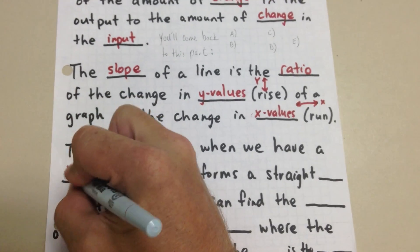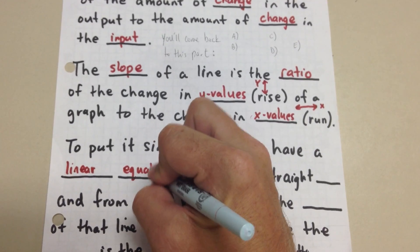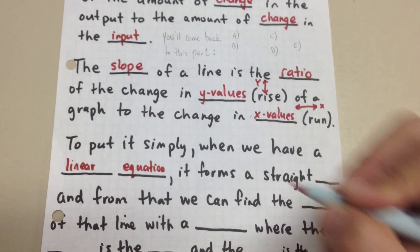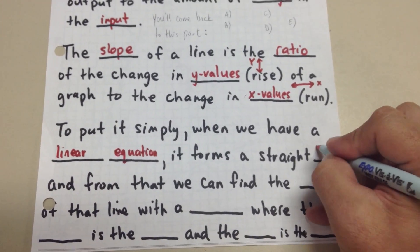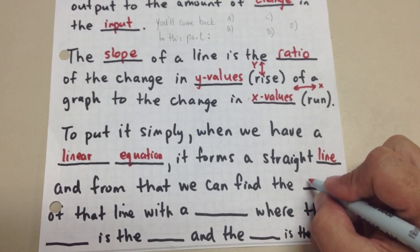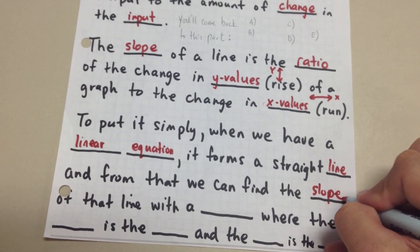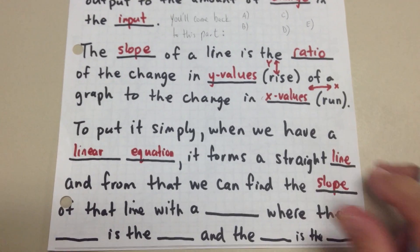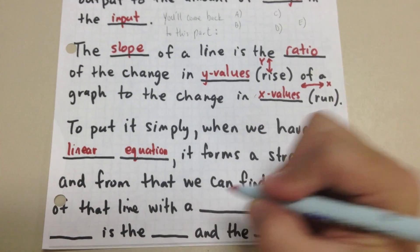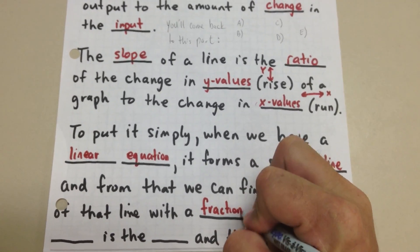And from that, we can find the slope, which is going to end up being a number. And we're going to use, so we can find the slope of a line with a fraction. They're always going to be written like fractions.